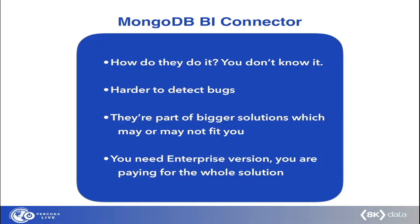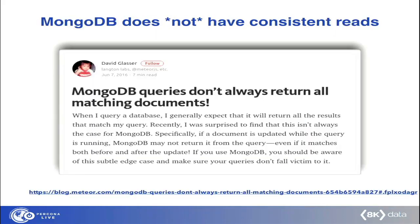Most of the drawbacks stem from the fact that it's a proprietary solution. As such, it's hard to understand how it really works, what is inside it, and how to debug the solution. Of course, you need to buy the enterprise version, which is a showstopper for many. There are also other problems intrinsic to MongoDB that are exposed through the connector. The connector is just a translator, so every characteristic or feature — whether good or bad — that MongoDB has will be exposed.